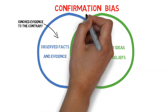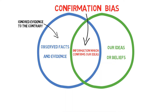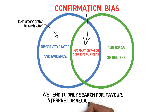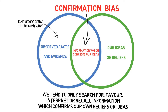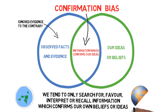Bias is when we think in a way which may lead us to be incorrect. As humans we tend to search for, favour, and recall information that confirms our point of view. For example, have you ever discussed global warming with someone who doesn't believe it to be true, or perhaps had a conversation with someone who believes that the earth is flat?